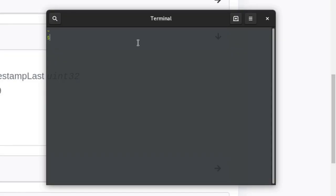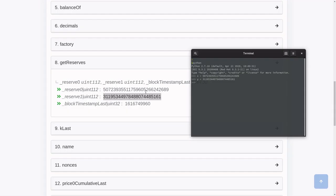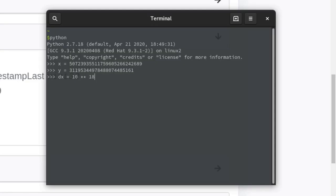I'm going to click on this. So that is our X value, and that is our Y value. I'm going to use Python to do the calculation. So I'm going to open Python shell inside my terminal. And then copy and paste the values over here to inside Python shell. And we'll say that DX is equal to 10 to the 18. So our DY should be equal to Y times 0.997 times DX divided by X plus 0.997 times DX. And that is our DY value.